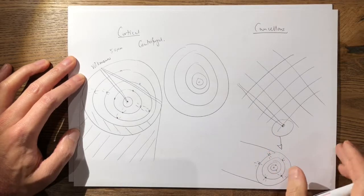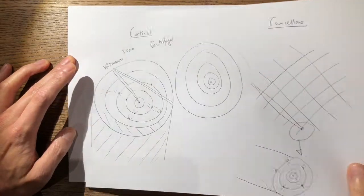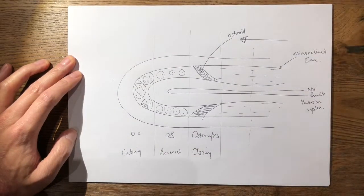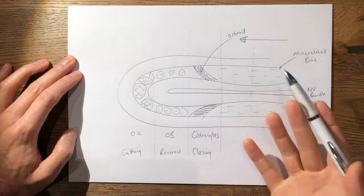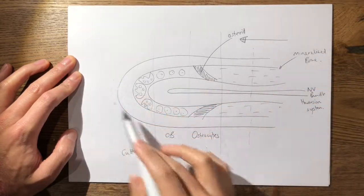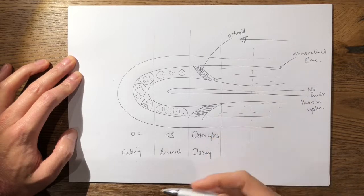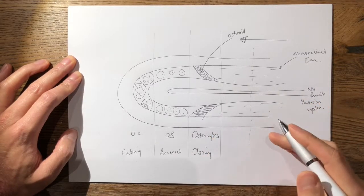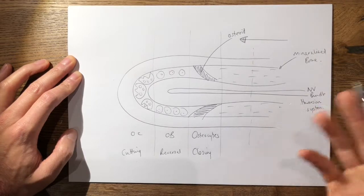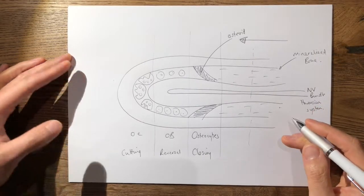This will then lead nicely on to how does bone heal. You can start talking about primary bone healing—this is how primary bone healing happens via cutting cones. Then you talk about secondary bone healing with the stages of bone healing and leading on to Perrin's strain theory.